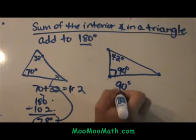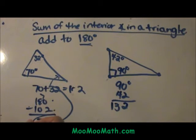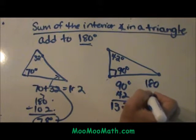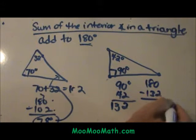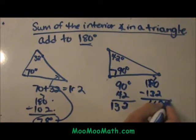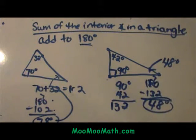90 plus 42 adds up to 132. We know the sum is 180, so if we have used up 132, what is left? We have 48 degrees. So the missing angle over here is 48 degrees.